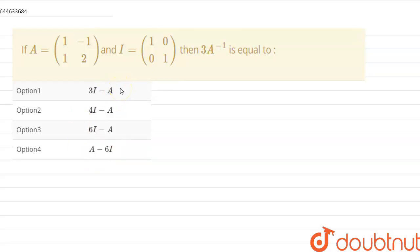So firstly what we can do is we are given that A is the matrix (1, -1; 1, 2) and I is (1, 0; 0, 1).